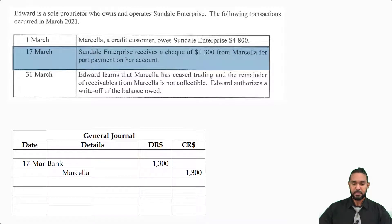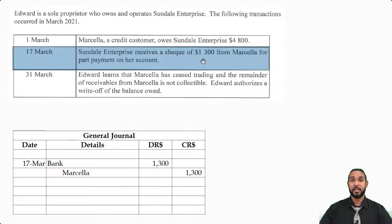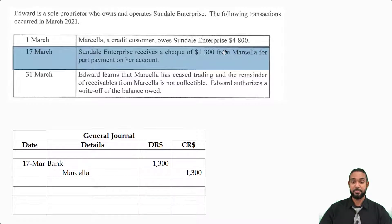The more technically correct reason for crediting Marcella is because Marcella is a credit customer who owes Sundale — that means Marcella is a debtor, which is an asset. Assets are debited to record increases and credited to record decreases. Since Marcella is paying us $1,300 of the $4,800 she owes, the total amount Marcella owes us is going down. That's a decrease in an asset, which is recorded by a credit — and that's why we are crediting Marcella.